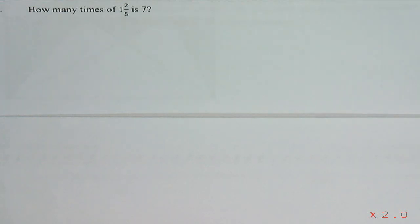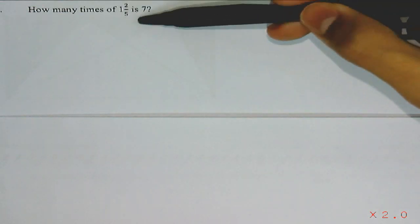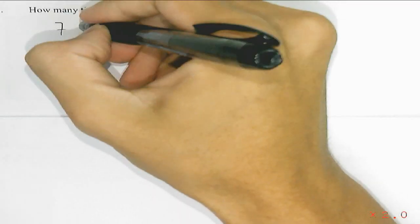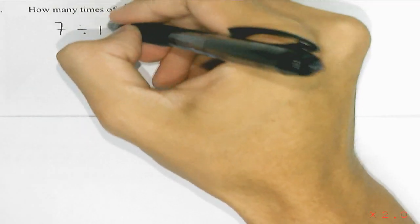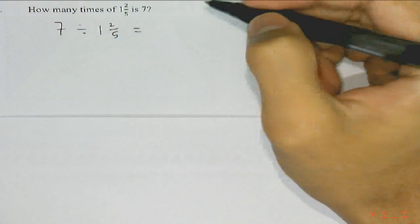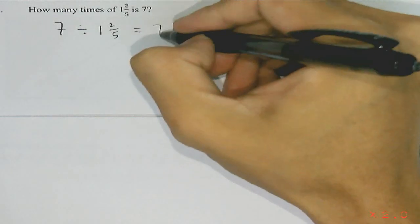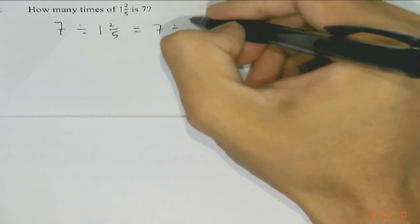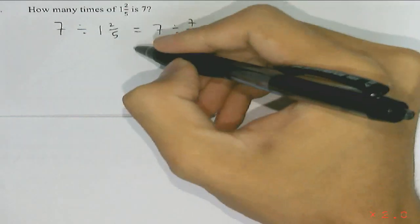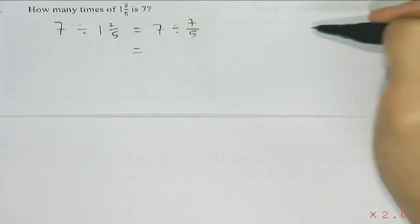To find how many times 1 and 2 fifths is in 7, we'll take 7 and divide by 1 and 2 fifths. So 1 and 2 fifths can be converted into an improper fraction: 7 over 5.